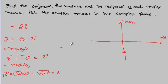Lastly, the reciprocal. We have 1 over z, which is 1 over negative 2i. To find the reciprocal, you multiply by the conjugate.